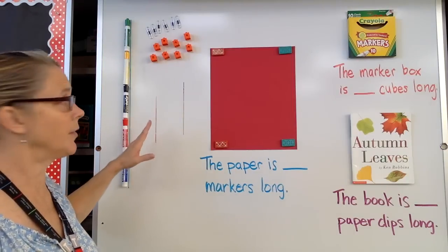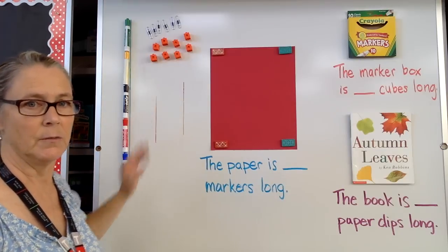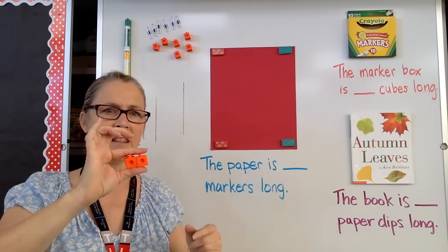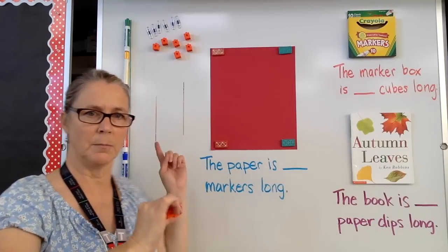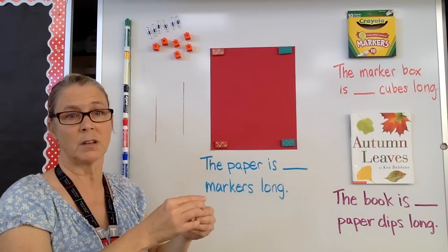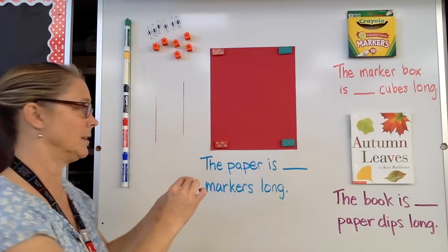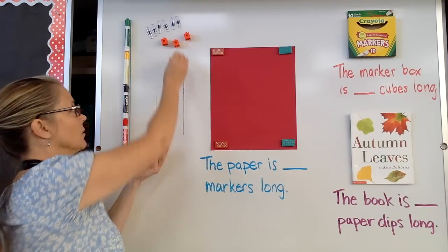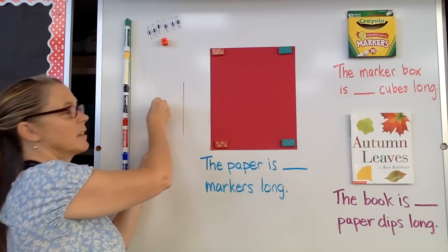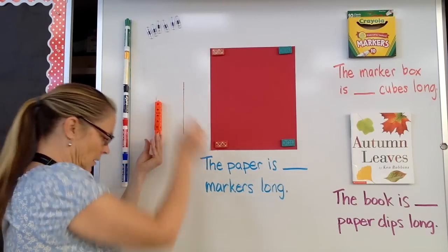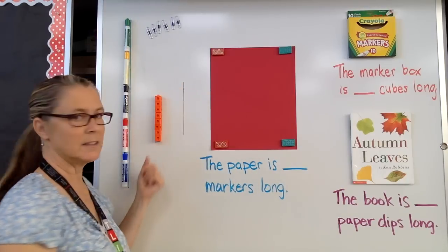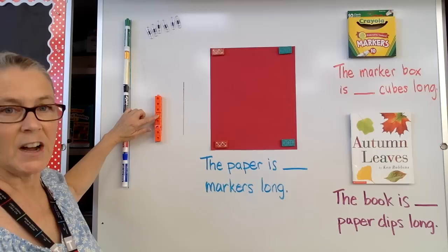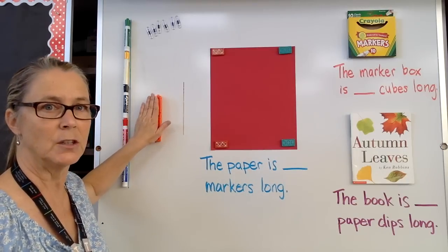Now let me demonstrate with our cubes. I have this line here. Cubes are different — they are the same size, but they stack. So I'm going to go ahead and stack these to measure this line and get an accurate measurement of how many cubes long it is. I continue to stack until I reach the top of the line. So now let's see how many cubes long this line is: one, two, three, four, five, six, seven, eight cubes long. This line is eight cubes long.